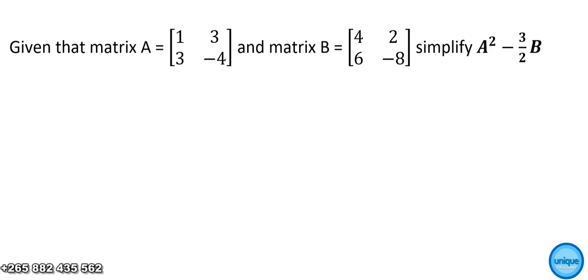Let's see how we can solve this problem. It's coming from Book 4 Mathematics, question number 1 about matrices. The question is: given that matrix A is [1, 3; 3, -4], and matrix B is [4, 2; 6, -8], we have been asked to simplify A squared minus three over two times B.